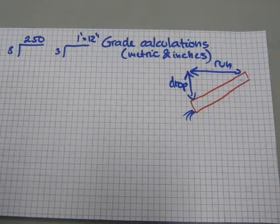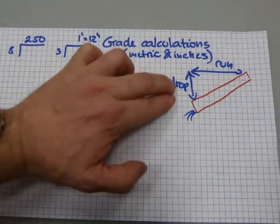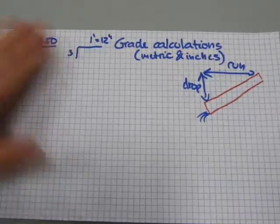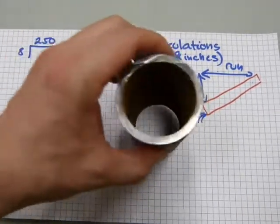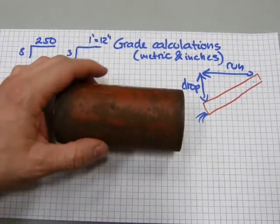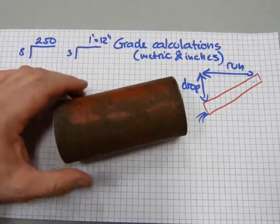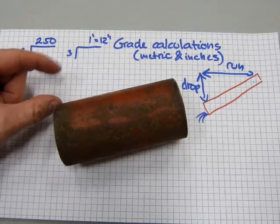The quantities in this calculation will be drop, run, and this grade. Just a refresher: drain pipes need to slope typically and preferably.